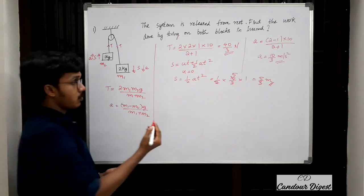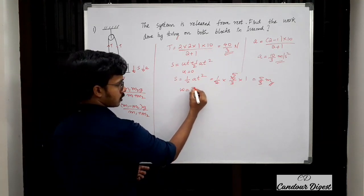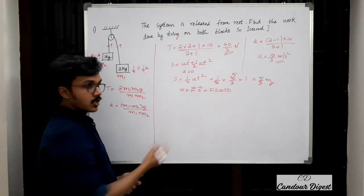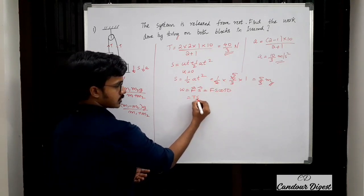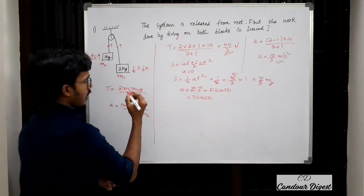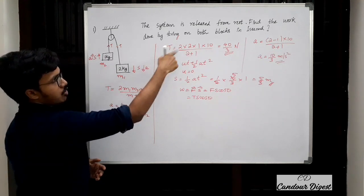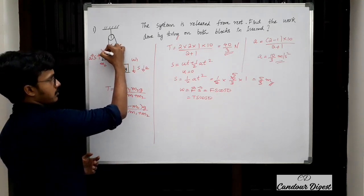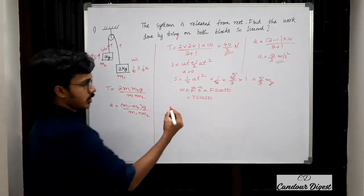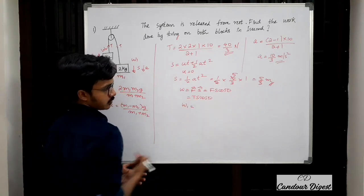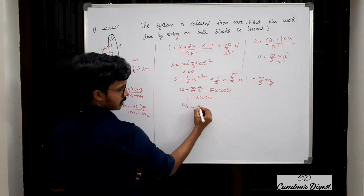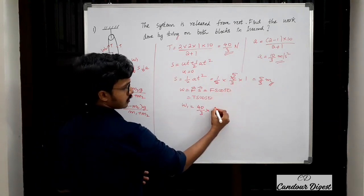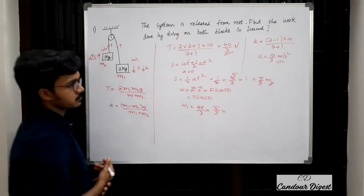Now we can find work done. Work done W = F · s = F·s·cosθ. Here the force is tension, so W = T·s·cosθ. We need to find work done by the string on both blocks — let W1 be work done on M1 and W2 on M2. For W1: T = 40/3 N and displacement s = 5/3 m.